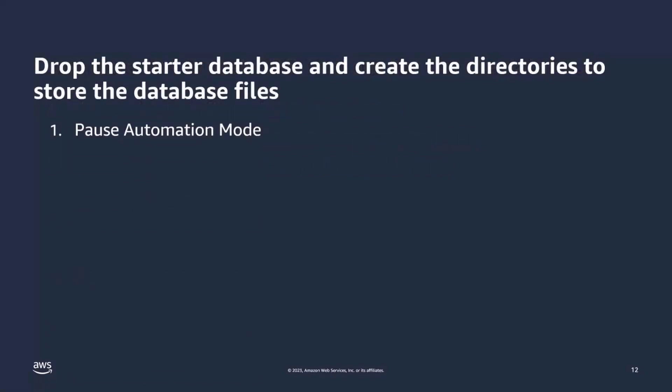Now we actually work with the database itself. The first thing we do is pause the automation mode. We're going to drop this database, and if we did not pause automation before dropping it, we'd start getting warnings and error messages from the automation saying the database is down — the sort of thing you'd expect from a managed database. So we pause the automation to prevent those notifications while we're doing this work.